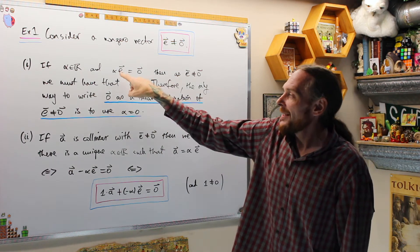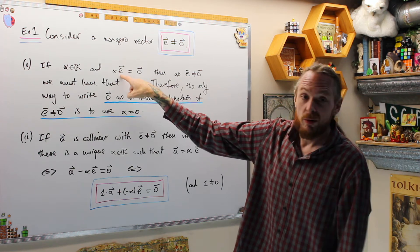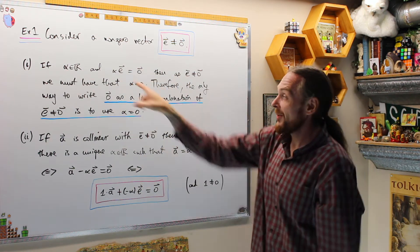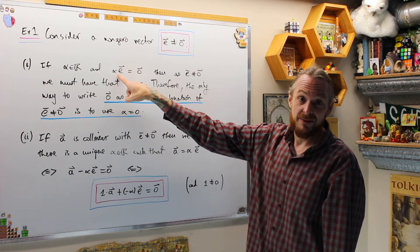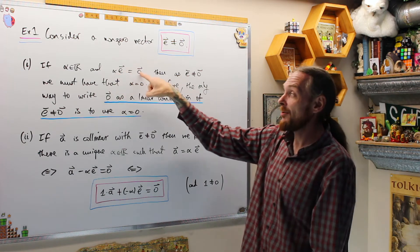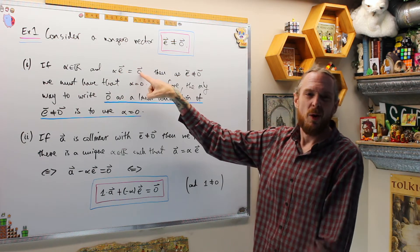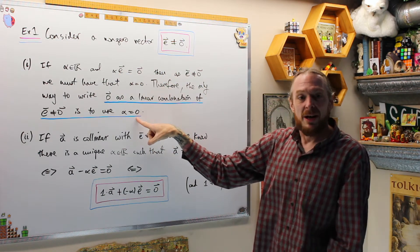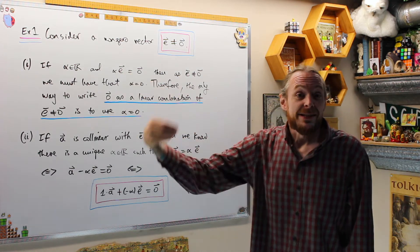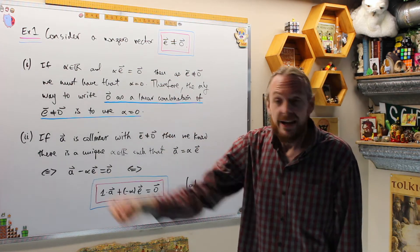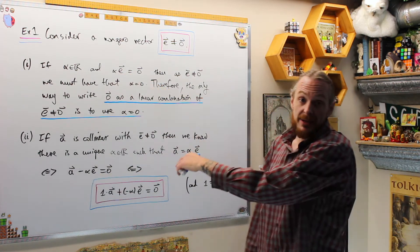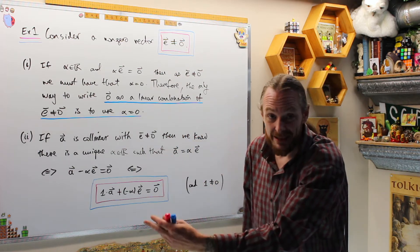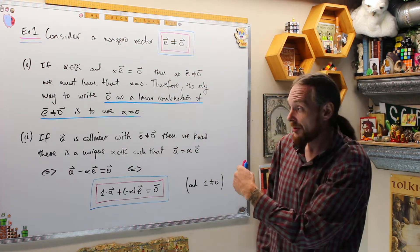What that really says is any set of a single vector is what we're going to call linearly independent. If I can write a linear combination of a single vector equal to zero, and the only way I can do that is if the number is zero, we say that vector is linearly independent. If I can find a non-zero number where I can do that, then we call it linearly dependent. We'll do that in the next example.